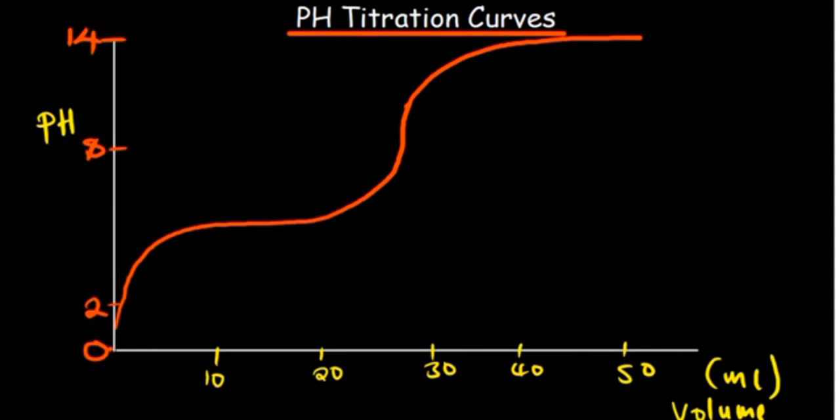And of course we know that we have strong acids, weak acids, strong bases, and weak bases. Those different titrations give us different curves. So now if you look at this curve that we have here, what are we able to see?